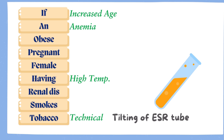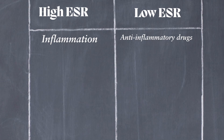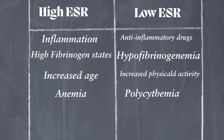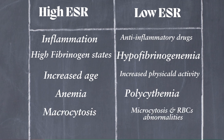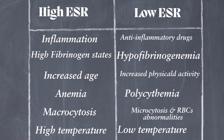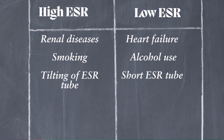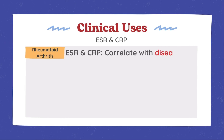Now let's discuss causes of low ESR. Anti-inflammatory drugs like high-dose steroids, high-dose salicylates, IL-6 inhibitors, and NSAIDs lower ESR. Low fibrinogen levels, like in hypofibrinogenemia, decrease ESR. Increased physical activity lowers ESR. Polycythemia — more RBCs — increases zeta potential, lowering ESR. Microcytosis, spherocytosis, and sickle cell disease lower ESR. Low temperatures slow sedimentation. Heart failure lowers ESR. Light alcohol use lowers it. A shorter ESR tube gives artificially lower readings.